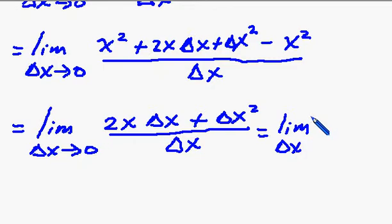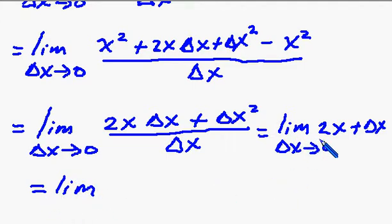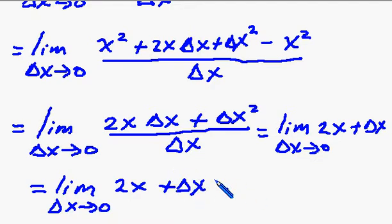So rewriting this limit one more time, delta x approaches 0. All right, rewriting this one more time, we have delta x approaching 0. Now, I can just do a direct substitution, plugging 0 directly into delta x, and we're left with 2x as our answer. And that concludes this problem set.